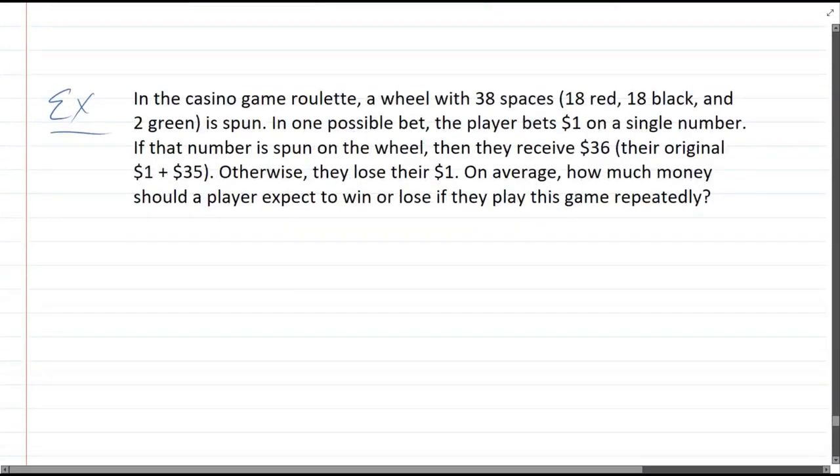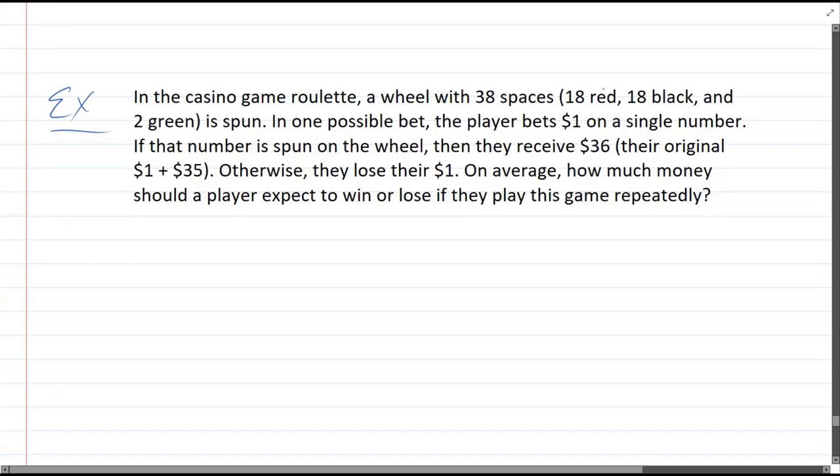One game is roulette. We're going to look at roulette. Now, roulette has 38 spaces. There's 18 red, 18 black, which is 36. There's two green, so that makes 38. Now, normally, you place a bet on a single number, and if you bet a dollar, then you win $36. Now, that might sound like a good deal, but remember, there's not 36 spaces. There's 38 spaces. So, we have the expected value is equal to probability of win times the value of the win plus probability of a loss times the value of the loss.